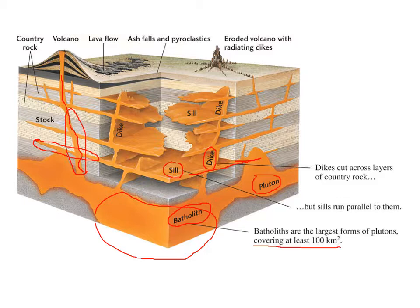Sometimes the magma will come all the way up to the surface, and then it becomes a volcanic rock — extrusive rock. We can have a lava flow that might be made of basalt or something like that, and that is an extrusive rock.